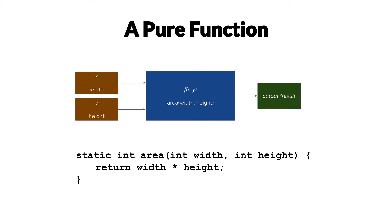In contrast, with a pure function, the key thing is that the output and result depend only on the inputs. So we can have here this f of x and y, or in other words, a function called area that takes an integer width and an integer height, and the output is going to depend only on that. As you can see, it's easy to see that this method is very testable. We don't really have to understand the context around it that well. We just have something called area that takes two integers and returns an integer. It's very simple — it depends on nothing outside of it, only on the input given to it.